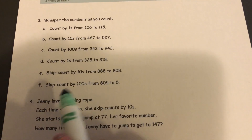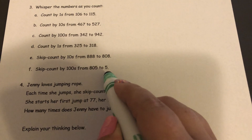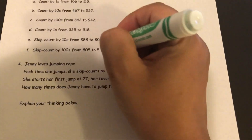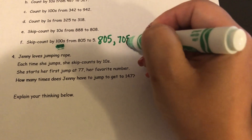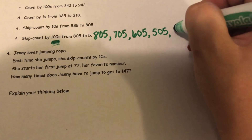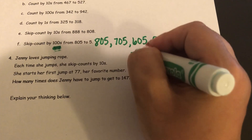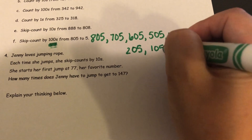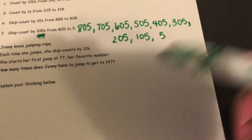Let's go down to the bottom one, and I'm going to write this one out so you can see what I mean. Skip count by hundreds from 805 to 5 — so we're actually going to go backwards. I would start at 805 and go backwards by hundreds: 705, 605, 505, 405, 305, 205, 105, and finally just 5. If it helps you to write them out, you definitely can. You don't have to only say them out loud.